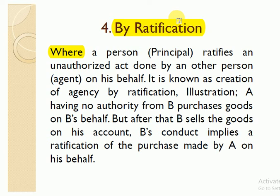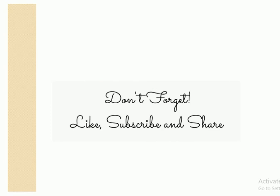So ratification works like this — if A ratifies B's act, there is no problem and A takes some profit. When a person ratifies an unauthorized act, it is known as creation of agency by ratification. Today we discussed how agency is created — the modes of creation of agency — and we also discussed the features of agency. I hope you liked the video. If you did, don't forget to like, subscribe, and share. Thank you so much.